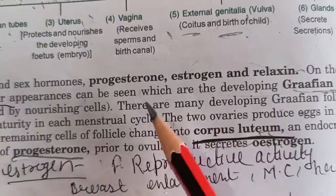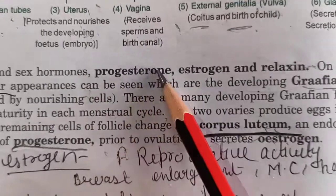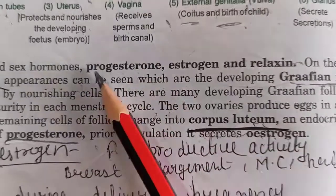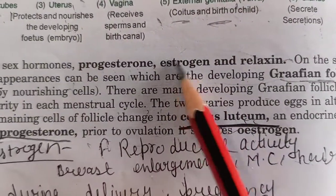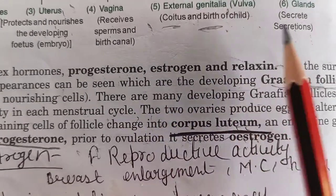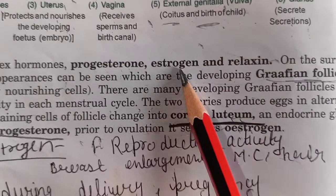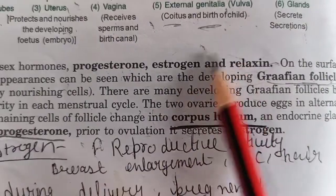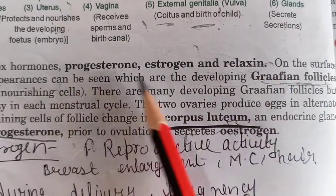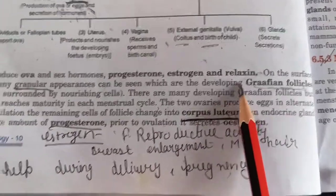Progesterone — remember P for progesterone and P for pregnancy — its function is to maintain pregnancy. Estrogen is responsible for reproductive activities like the menstrual cycle, breast enlargement, and erection. It also works alongside progesterone. These are the three female sex hormones.